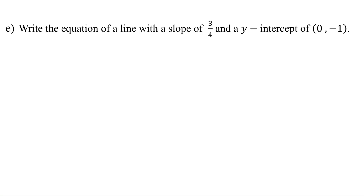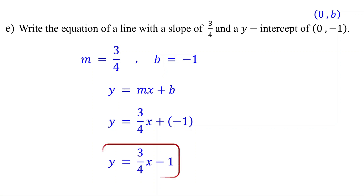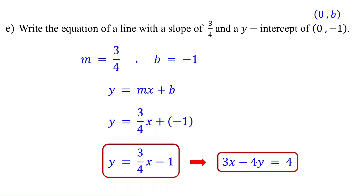Sometimes, the y-intercept is given as a point. In that case, b is the y-coordinate of the point. So here, the slope is 3 fourths and the y-intercept is negative 1. If you are asked to write the equation in standard form, just convert this. For a step-by-step lesson on converting slope-intercept form to standard form, check the link in the description.